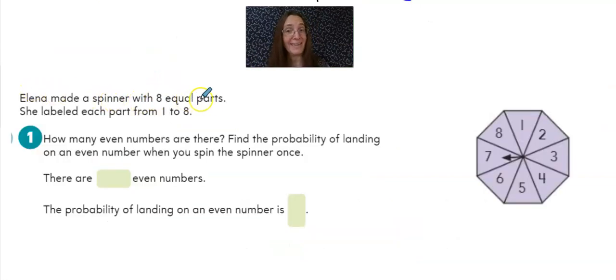Elena made a spinner with eight equal parts. And here it is. She labeled each part from one to eight. How many even numbers are there? Find the probability of landing on an even number when you spin the spinner once.